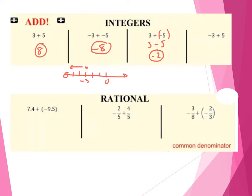Next one, I've got negative 3 plus 5. Again, this one should be easy — starting at negative 3. When we add, if you think back to our number line, when we add we're going to move to our right, meaning we're going to gain 5 from that negative 3. So think about if we're missing 3, we add 5 to it, that's going to give us positive 2. So hopefully that's a little bit of review.